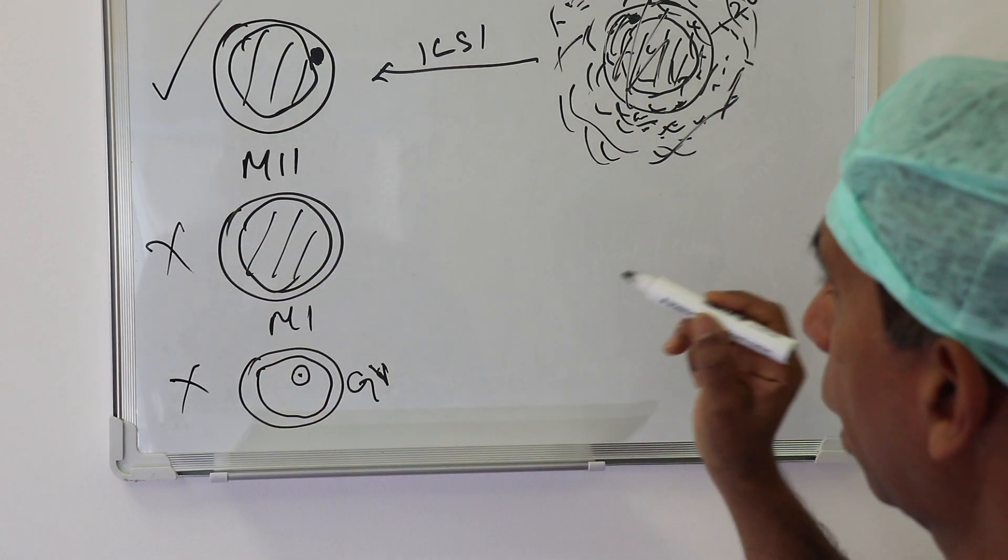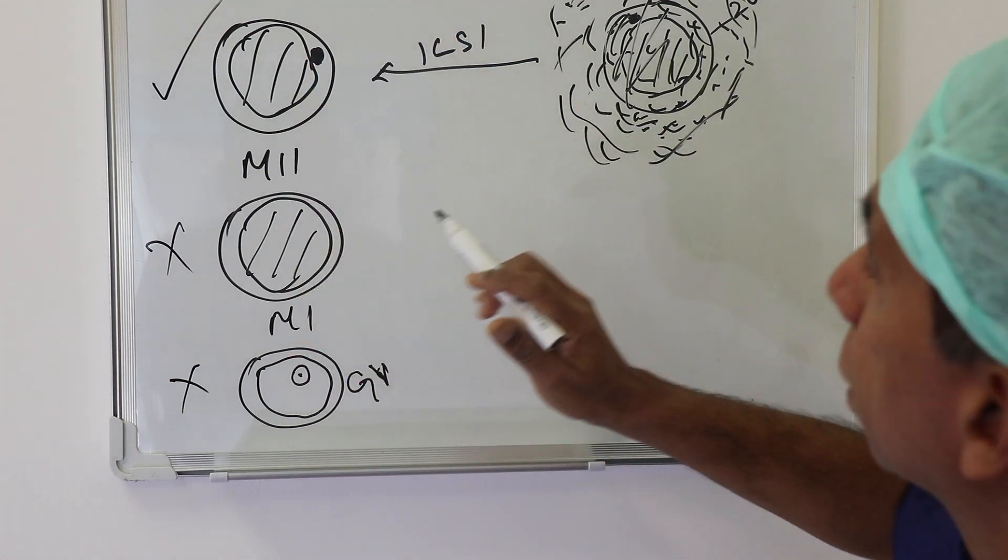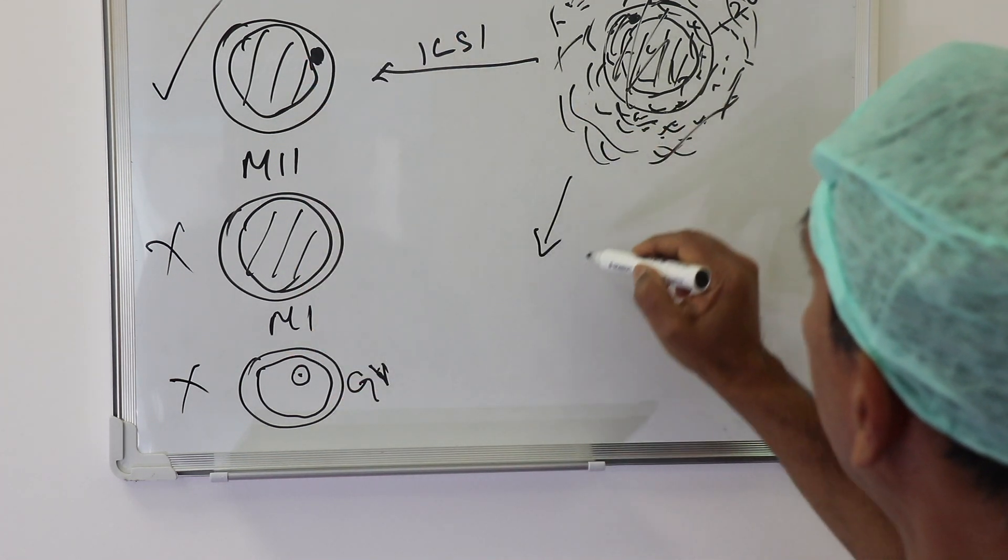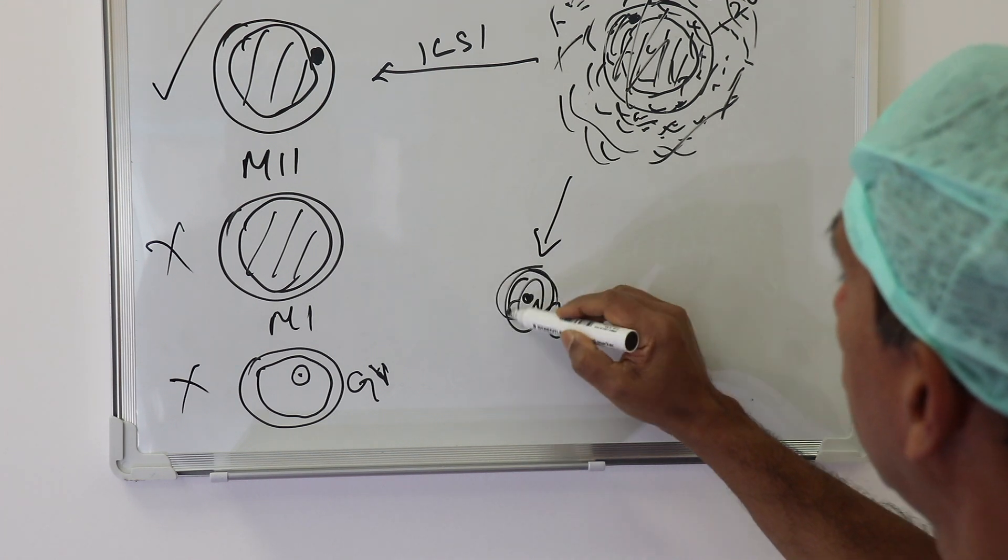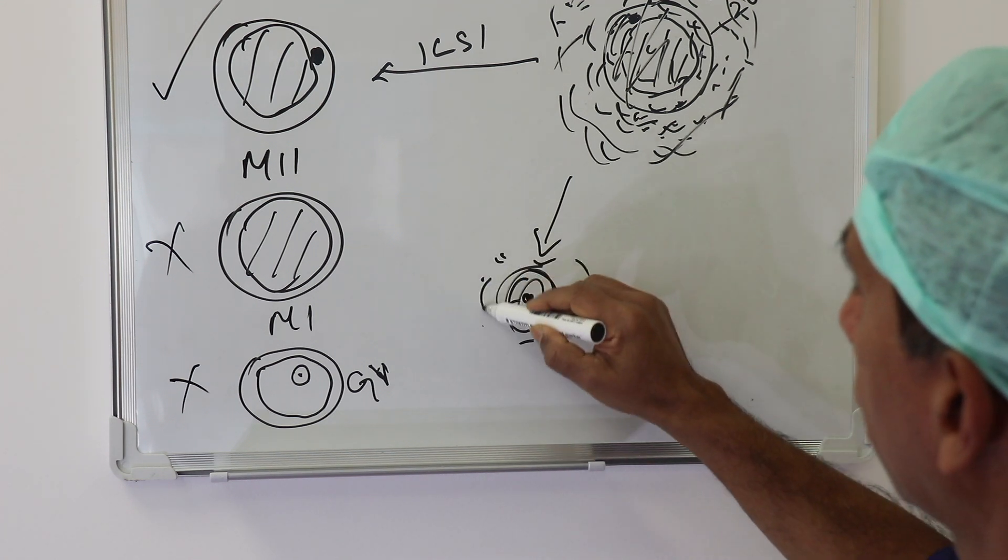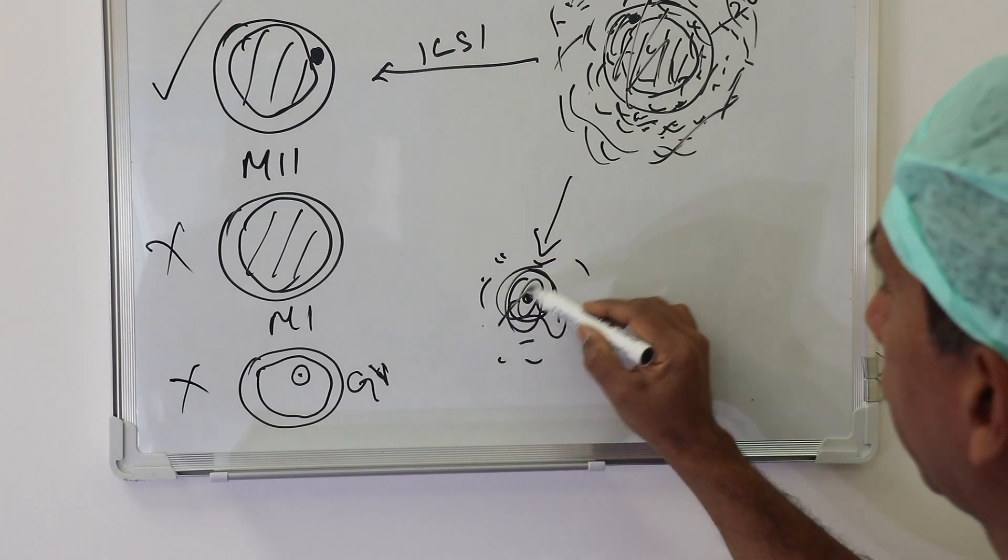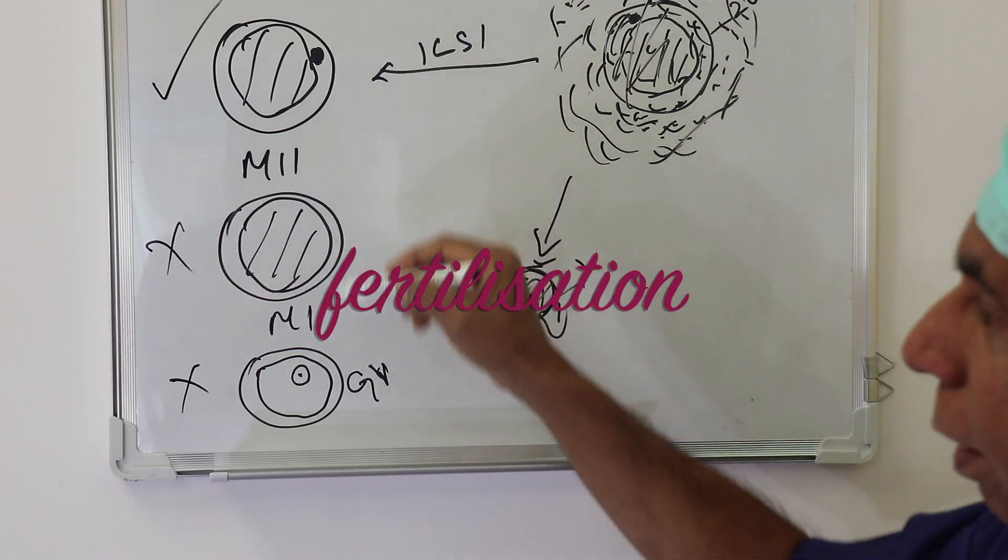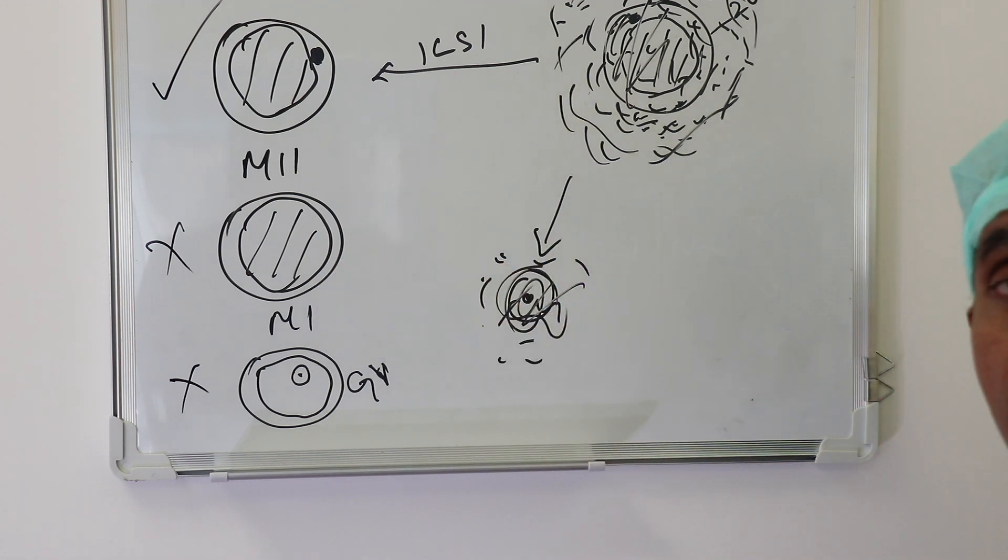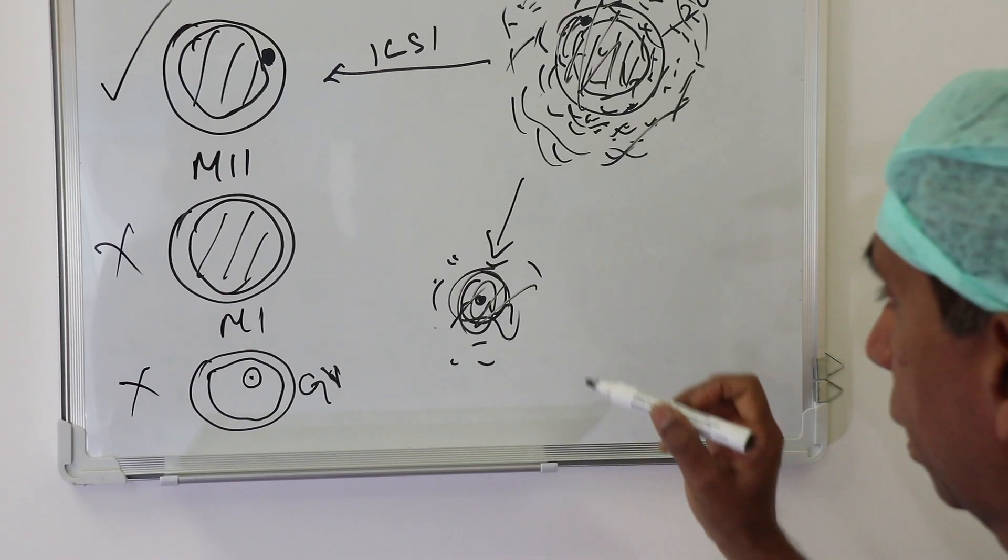In IVF we don't do this, so we just put the whole thing—the egg and the cumulus cells—along with the sperm and leave it overnight. Only next day we remove these cells to see the stage of maturation and the fertilization.